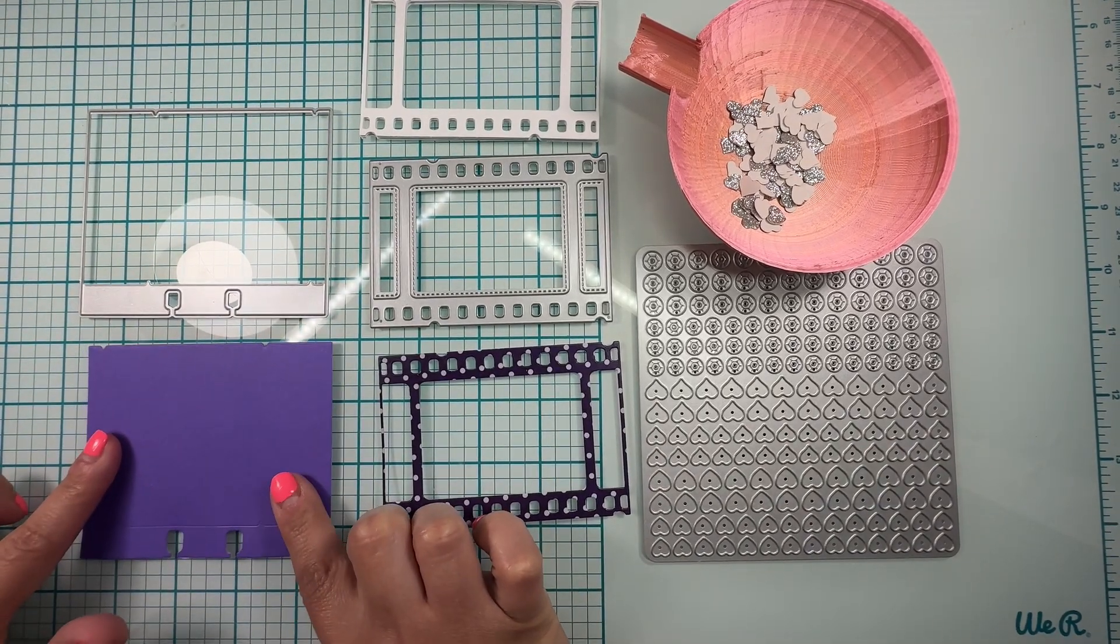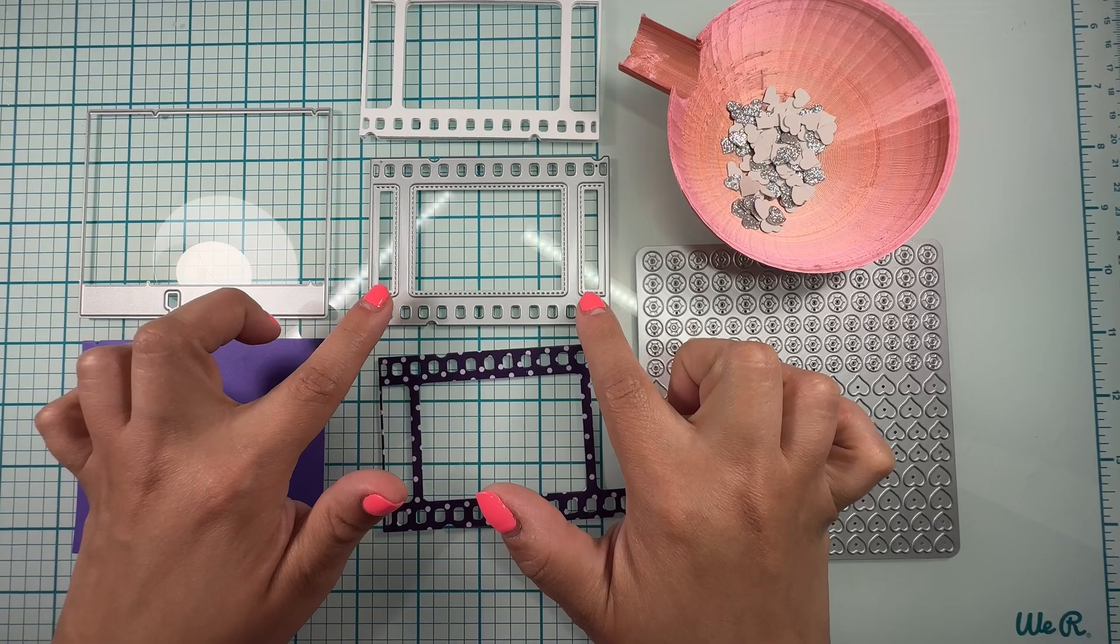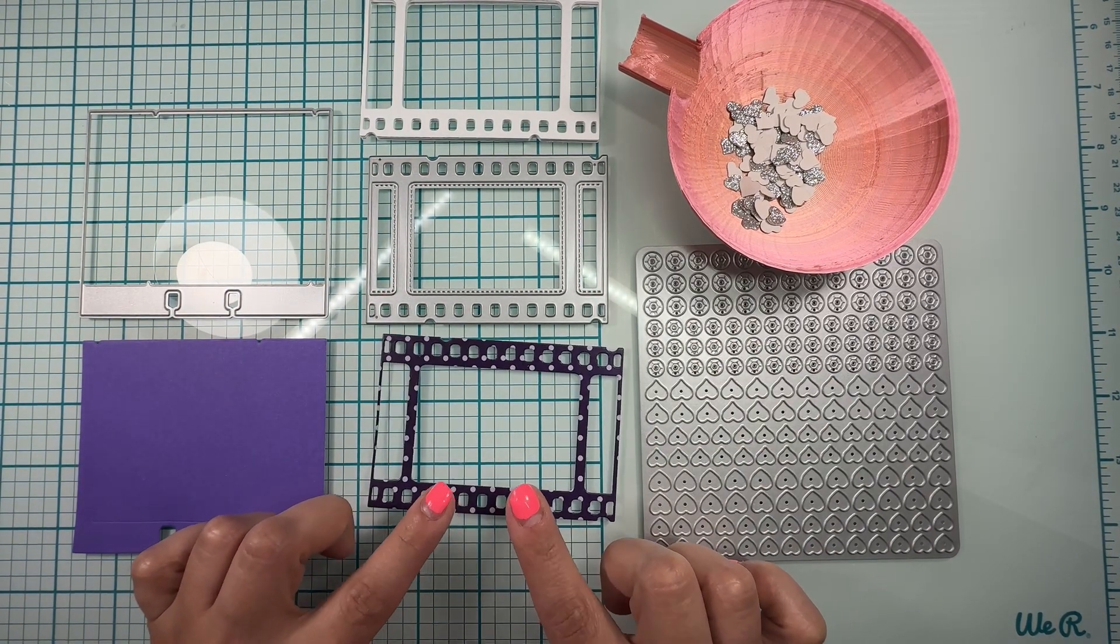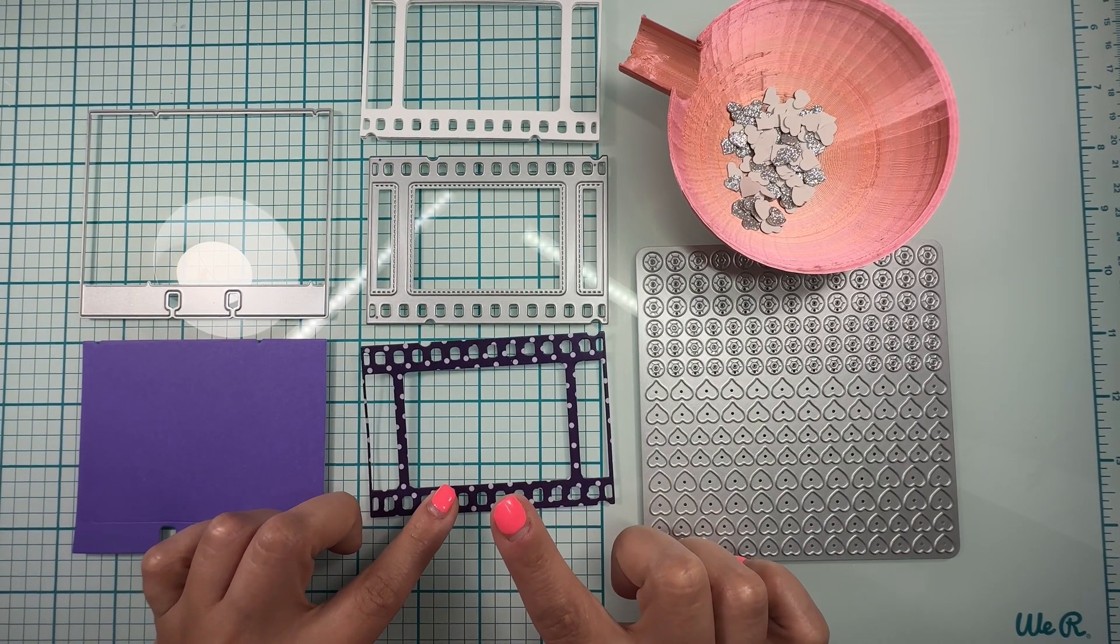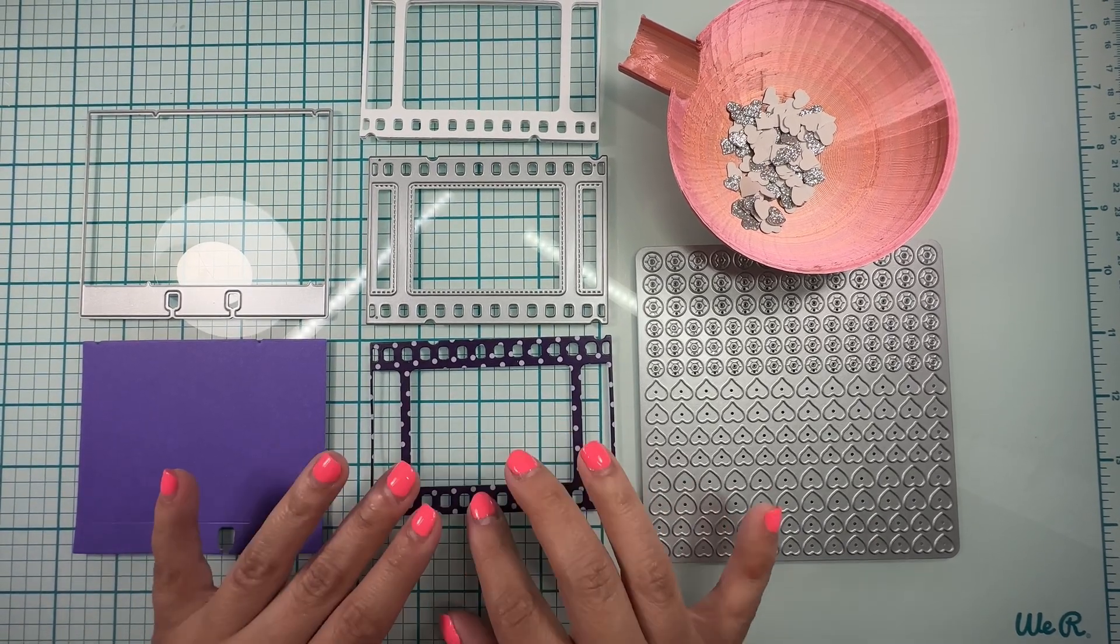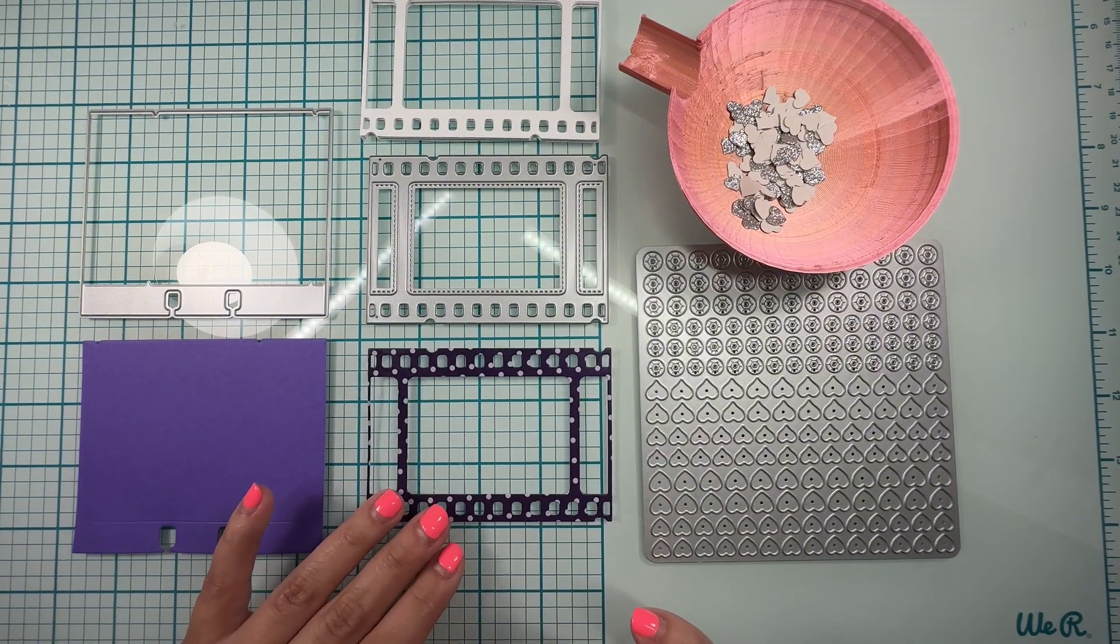So from this die I have cut this solid purple, and then from the film strip I have cut the polka dot one from the summer film 6x6 paper pack. These papers are absolutely gorgeous, I just chose this one.